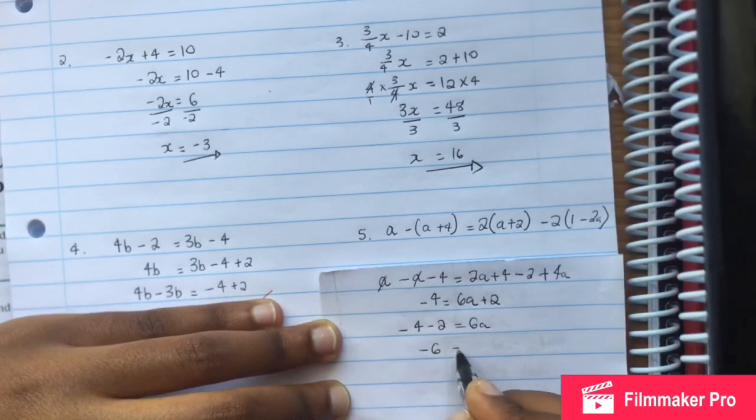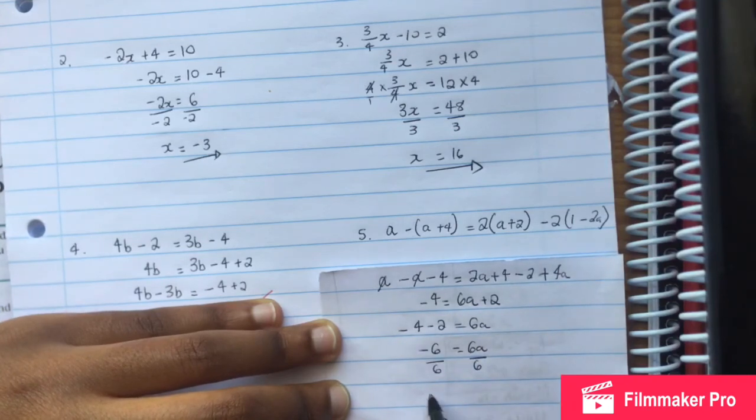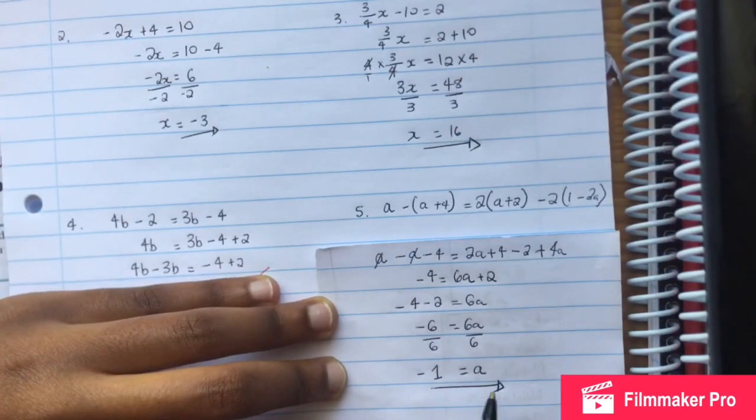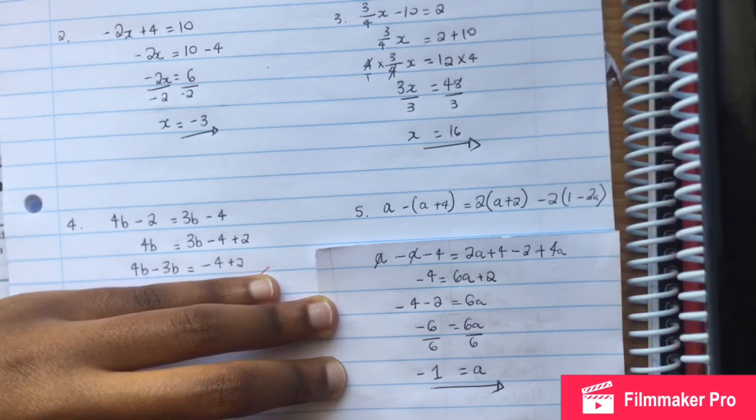Then we have 6a, divided by 6, divided by 6. Negative 6 divided by 6, and then negative 1, and then is equal to a. So a is equal to negative 1.